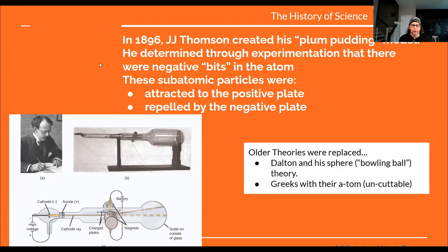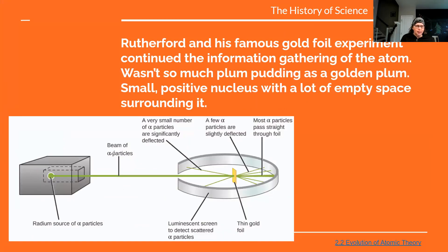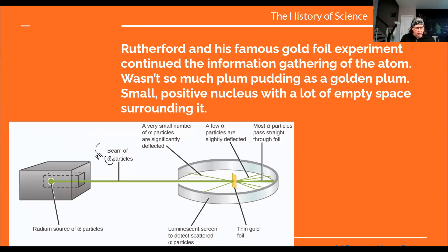As we grow, we learn more. Rutherford came along and he shot some alpha particles at a gold piece of foil, and a couple of those particles bounced back. So he's able to say, okay, so we probably have a pretty dense center right there that has a positive charge. And then the vast majority of those alpha particles went all the way through. So then he was like, oh, we have a large area of empty space. So it wasn't so much plum pudding as a golden plum. We had that positive nucleus in the center and then a lot of empty space surrounding it.